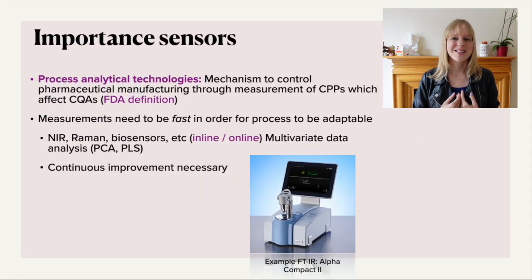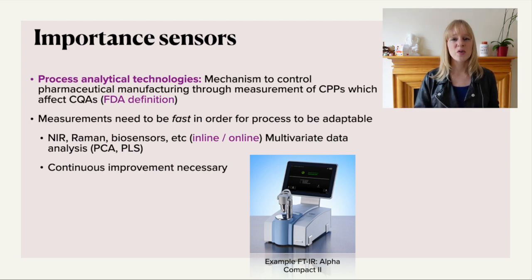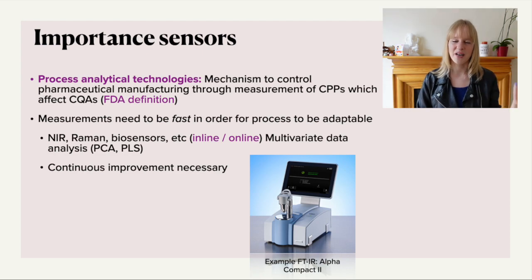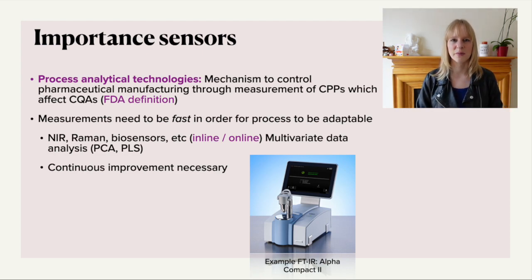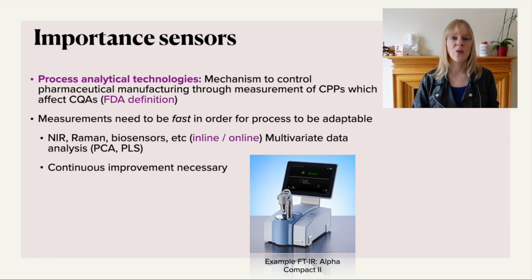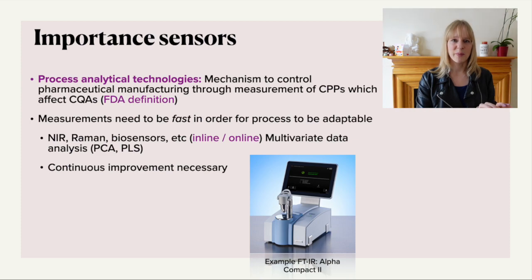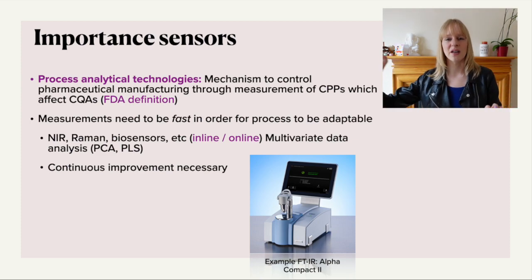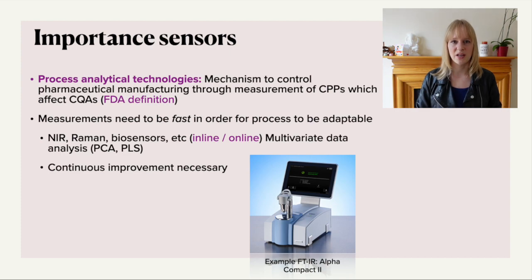I work in sensors, and you will see that this is a very critical aspect of quality by design. The way this works is by using process analytical technologies, as defined in that FDA document released in 2004. What it does is allow you to control your manufacturing process by measuring these critical process parameters — the ones that can actually affect your critical quality attributes at the end.